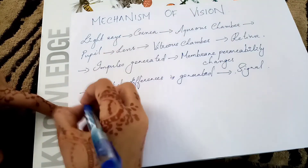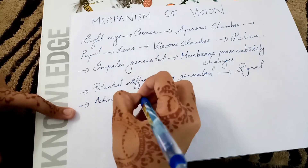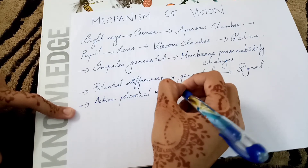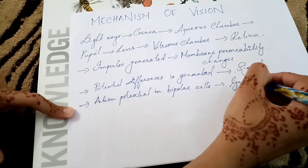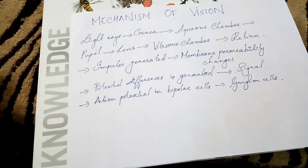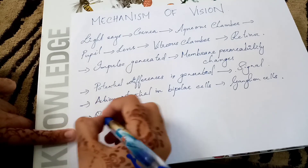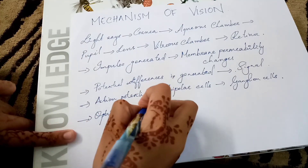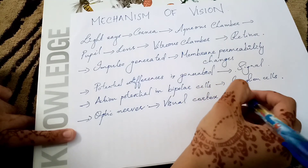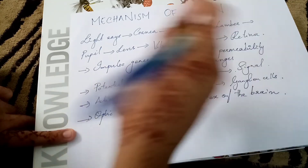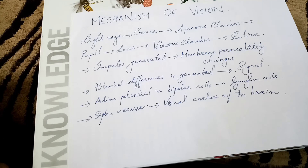This produces a signal that generates action potentials in bipolar cells, which are then transmitted by the optic nerves to the visual cortex of the brain. This is where the neural impulses are analyzed and the image formed on the retina is recognized based on earlier memory and experience.